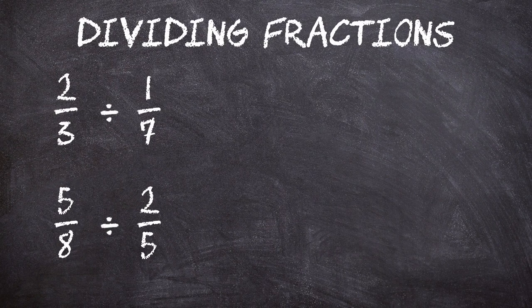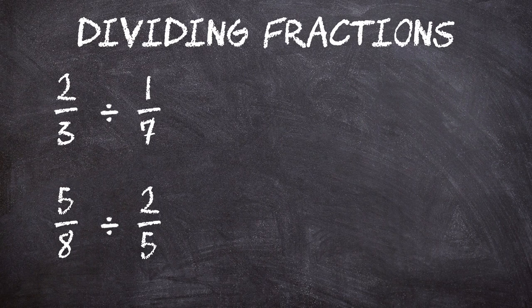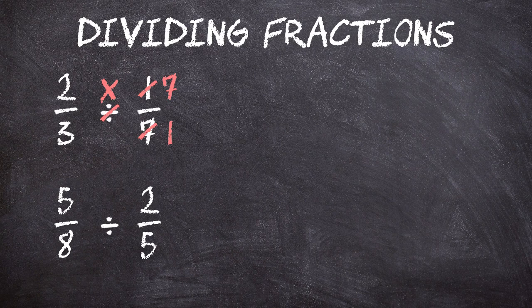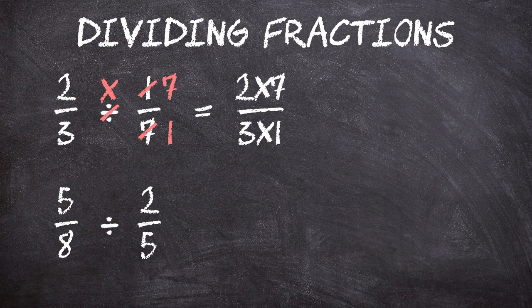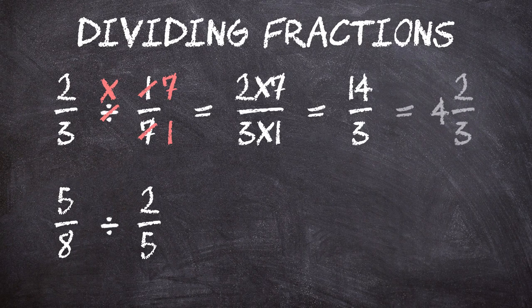Dividing fractions is a little bit trickier, but not too much so. When dividing fractions, we first have to find the reciprocal of the second fraction — that is, we just have to turn the second fraction upside down. But instead of dividing, we then have to multiply. So for the first problem, two-thirds divided by one-seventh, we find the reciprocal of one-seventh by turning it upside down to get seven over one, and change the divide sign to a multiply. Now we multiply top by top and bottom by bottom: two times seven over three times one gives us fourteen over three, which we can change into a mixed fraction. Three goes into fourteen four times with a remainder of two, giving us four and two-thirds.